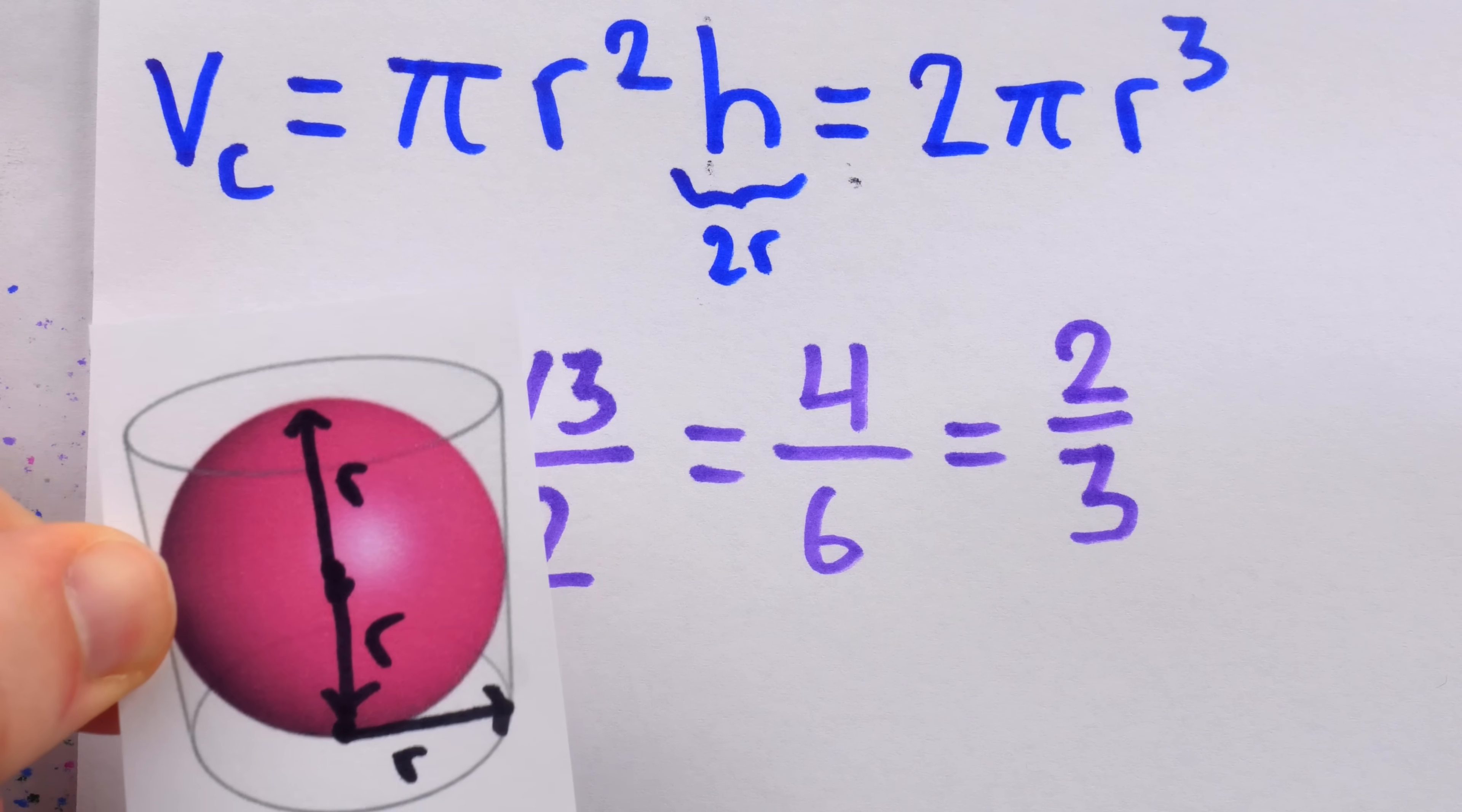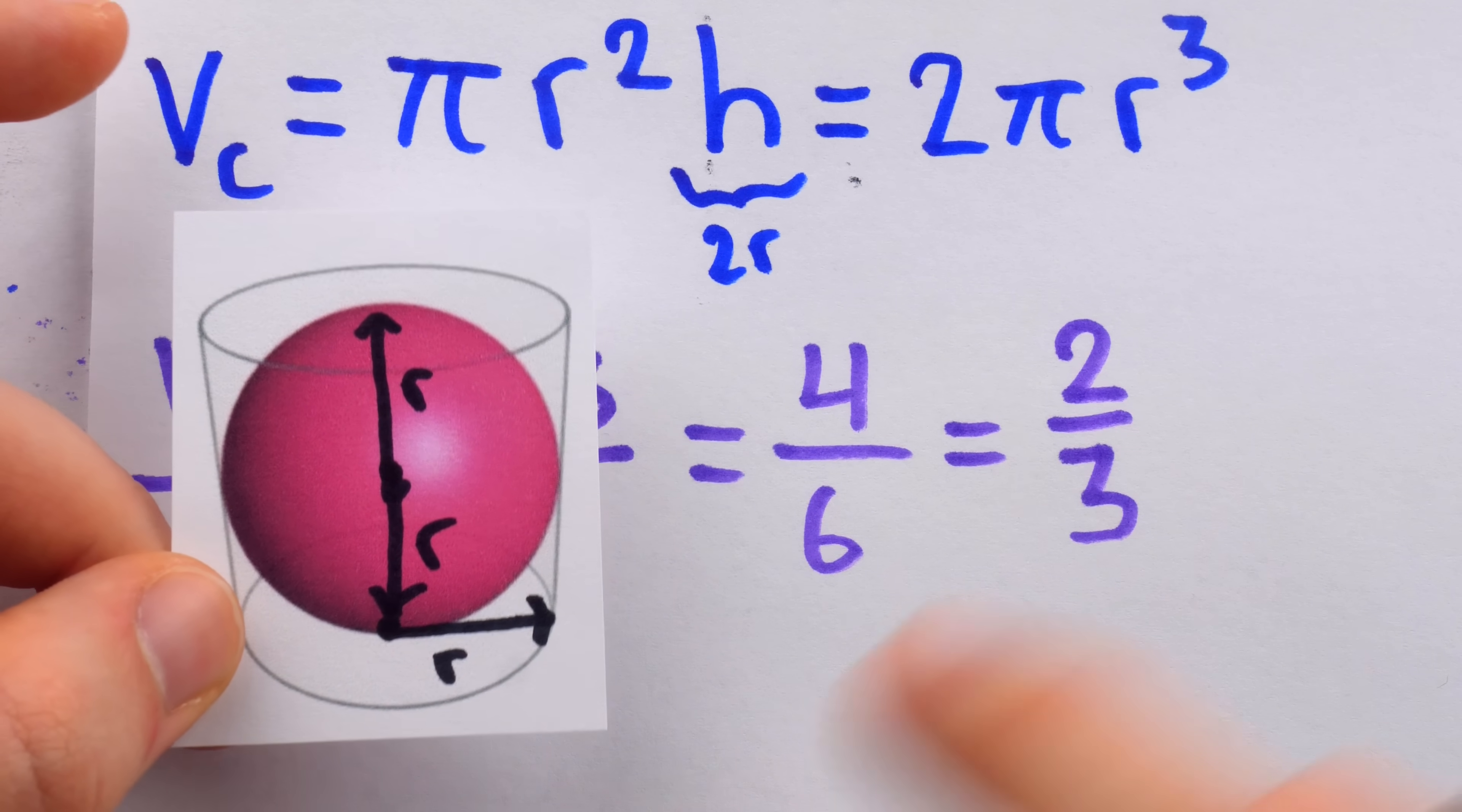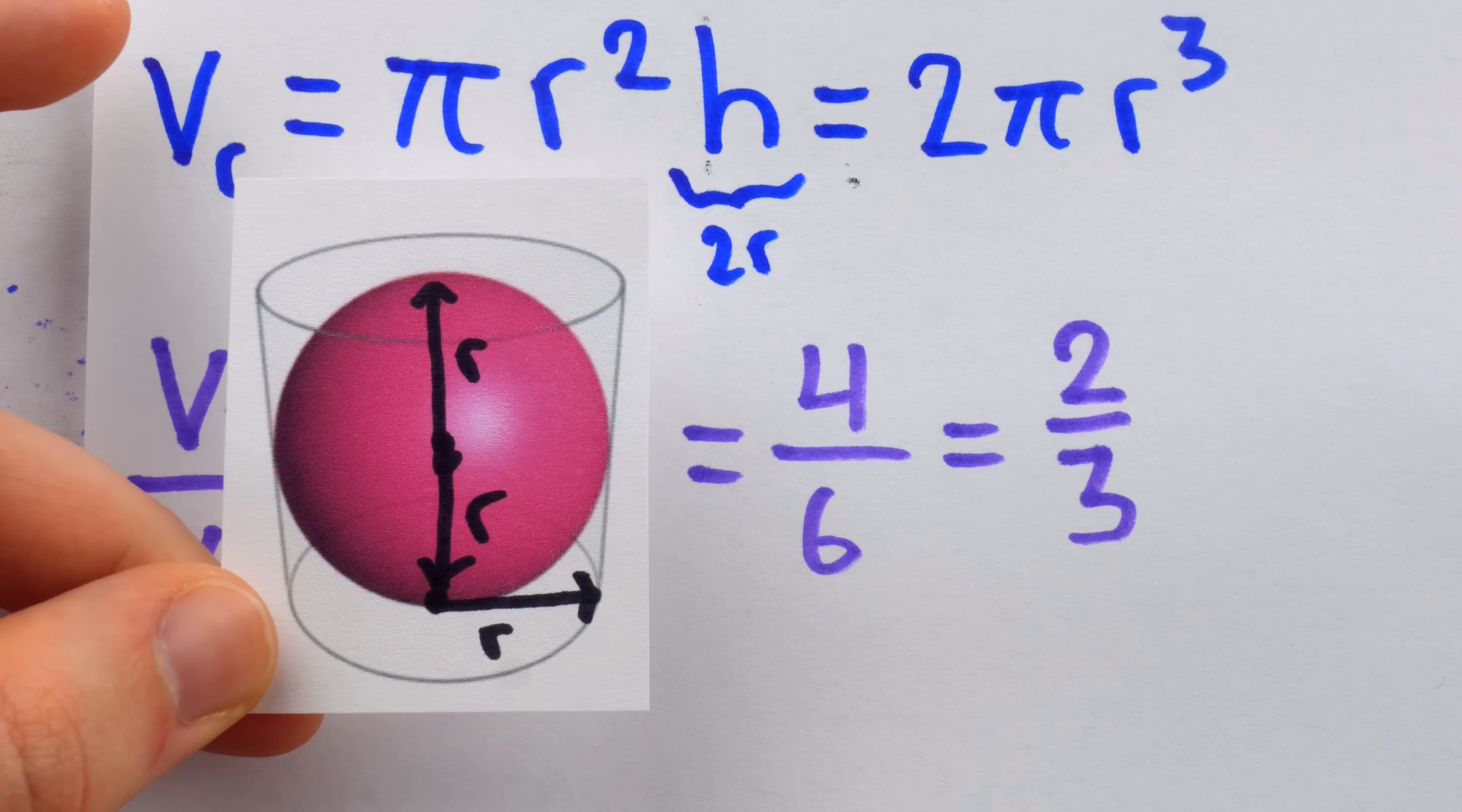Archimedes was so pleased with this result that he asked for it to be inscribed on his tombstone. In this case, our visual estimation was correct in that the sphere takes up more than half of the cylinder, but it was hard to see that it would be two-thirds. At a glance, it really looks like the sphere takes up more than two-thirds, because it's hard to appreciate the volume of the nooks and crannies that are left empty.